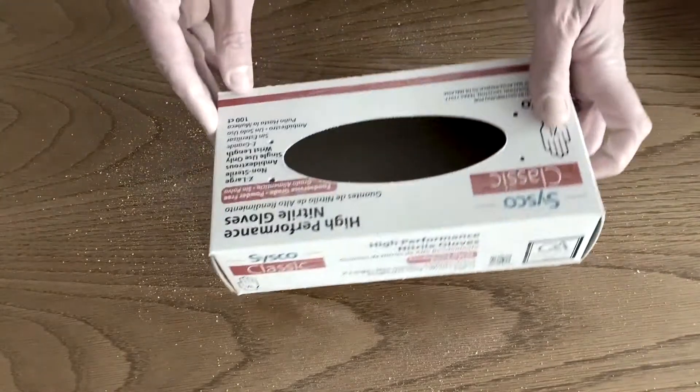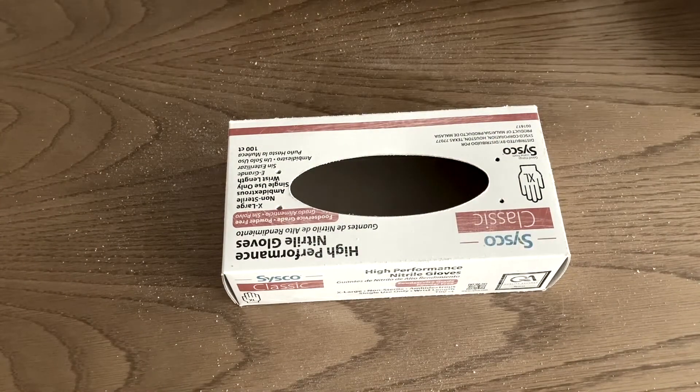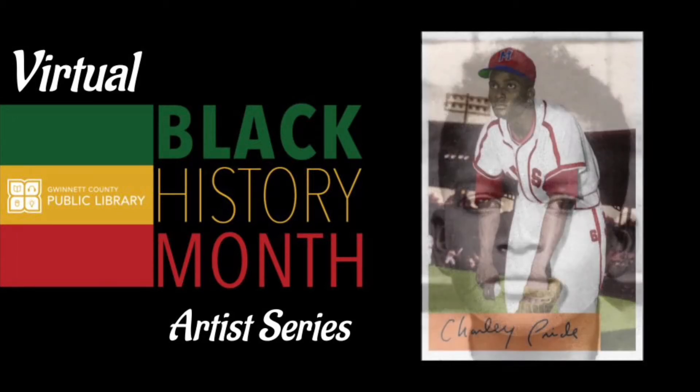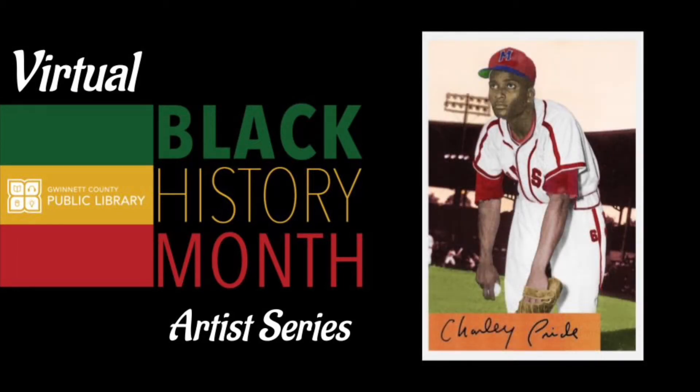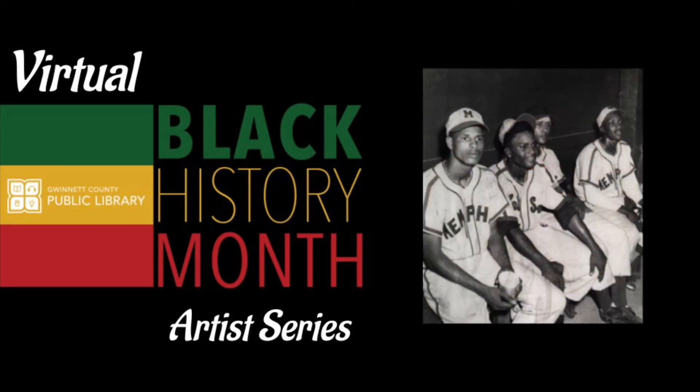Now, while I take this outside and paint it, I'm going to tell you about the awesomeness that is Charlie Pride. Born on March 18, 1934 in Sledge, Mississippi, Charlie Frank Pride initially had dreams of becoming a baseball player. In 1952, he was a pitcher for the Memphis Red Sox as part of the Negro American League. In 1953, he signed with the Boise Yankees, a Class C farm team of the New York Yankees.